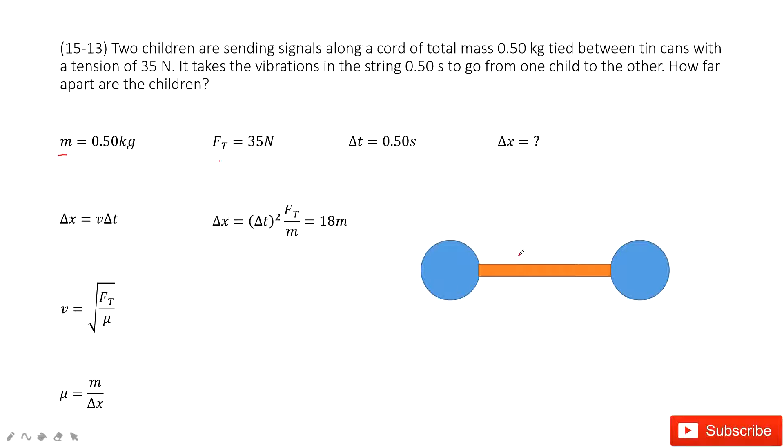The time delta T from the signal from one end to another end. Now you need to find the distance between these two ends. The delta x we need to find from this end to this end, and we know the time taking is 0.5 seconds.